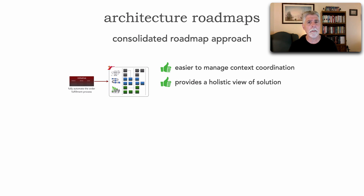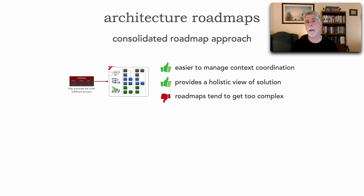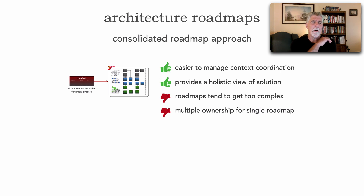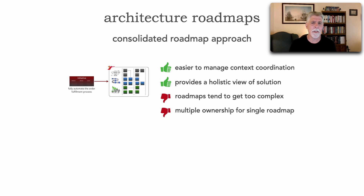That holistic view is useful for determining what else is impacted when something slips. However, there are negative trade-offs: these roadmaps can become very complex because we're taking a two-dimensional piece of paper and adding a third dimension — not only iterations and segments but also the dimension of context. Another challenge is multiple authors for a single document, such as a large Visio plotter diagram, which can get a little tricky — though many of these trade-offs depend on the environment and the quality of collaboration between stakeholders.